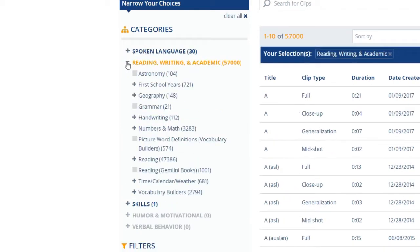The Reading, Writing and Academic category contains sections for early school years, ABCs, handwriting, reading, grammar, as well as clips for subjects such as astronomy and geography.